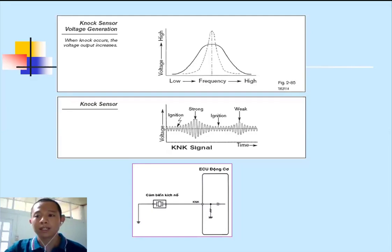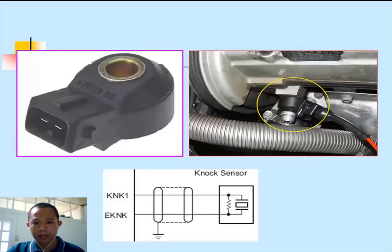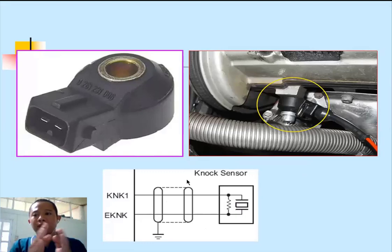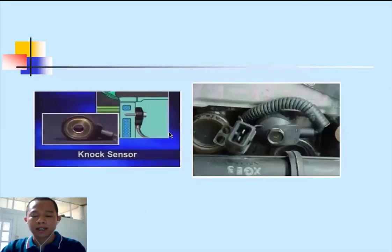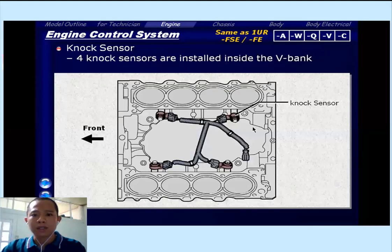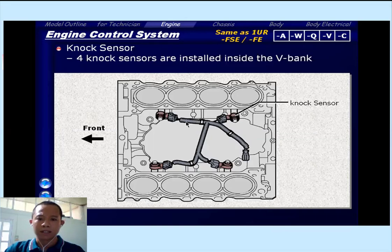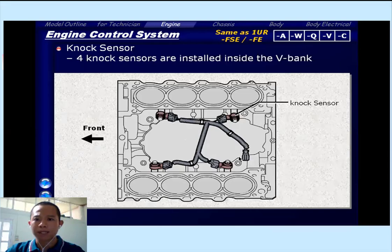That's the working principle of the round knock sensor. There's also a flat knock sensor type. The flat type doesn't use resonance, but it has a wider operating range compared to the round type. The flat sensor is used in higher-end vehicles.